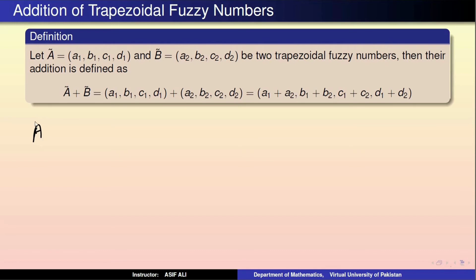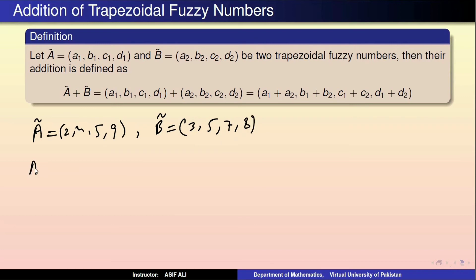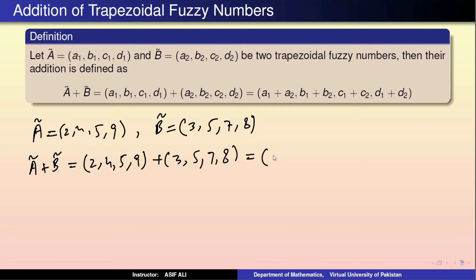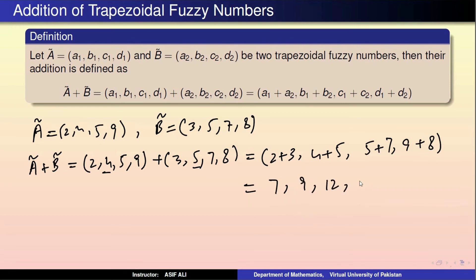To exemplify: if A tilde = (2, 4, 5, 9) and B tilde = (3, 5, 7, 8), then A tilde plus B tilde = (2, 4, 5, 9) + (3, 5, 7, 8) = (2+3, 4+5, 5+7, 9+8) = (5, 9, 12, 17).